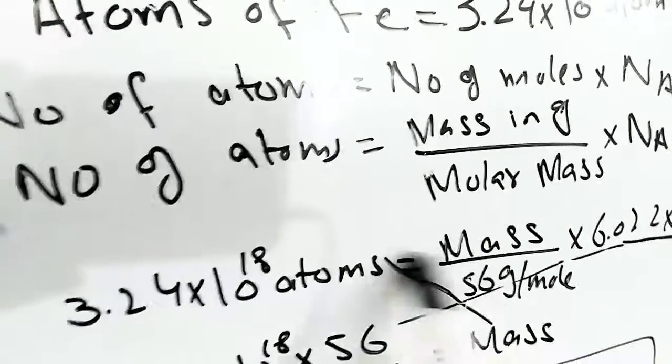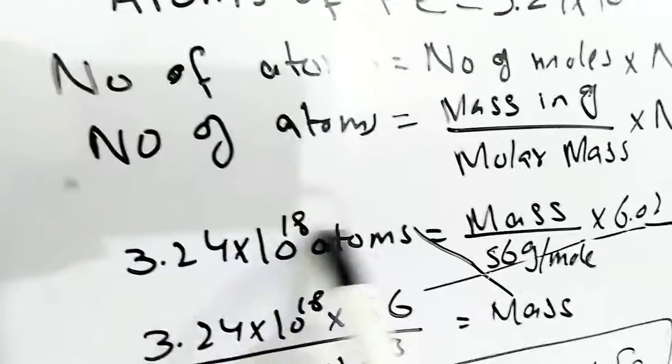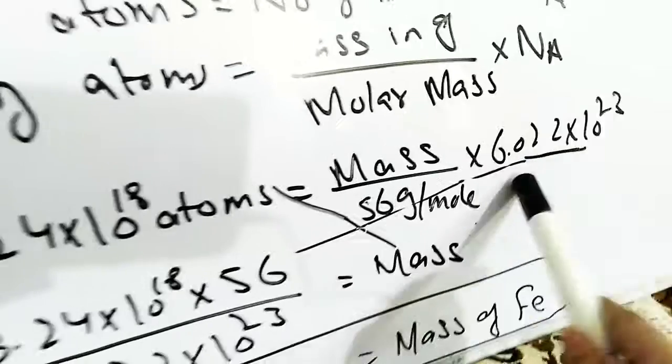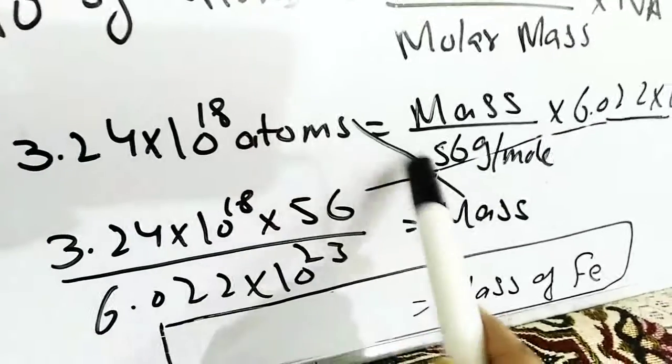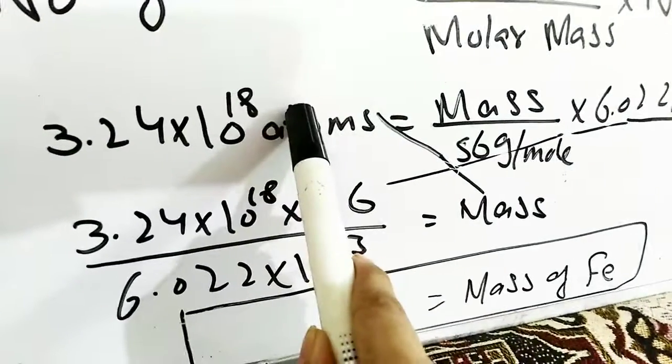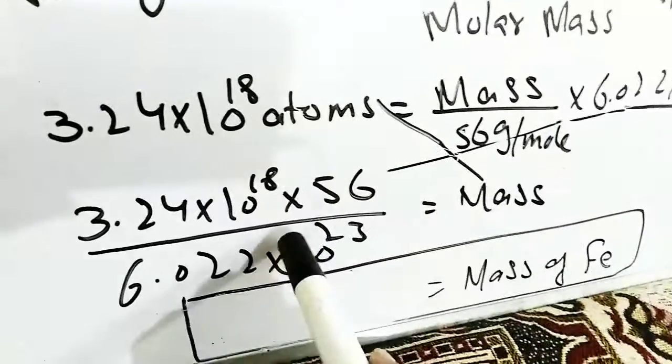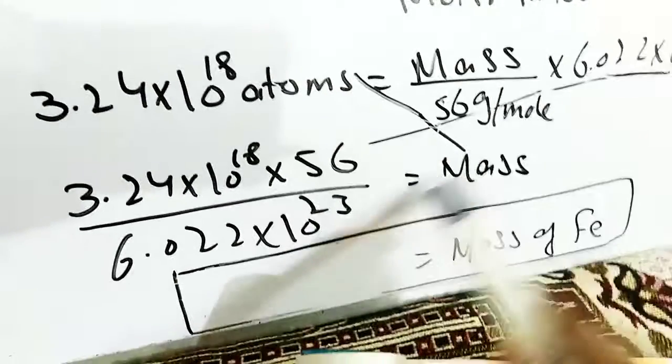Now over here we will put the values: 3.24 × 10^18 atoms and 6.022 × 10^23. So now we will do cross multiplication. This one will be multiplied with these atoms, and this Avogadro's number will be divided with this one. So in this way we have to calculate the mass of iron.